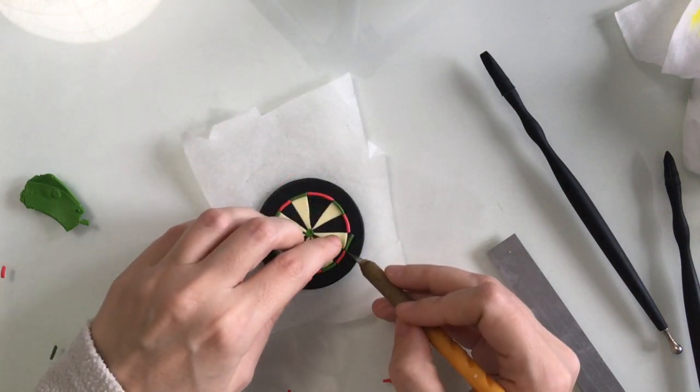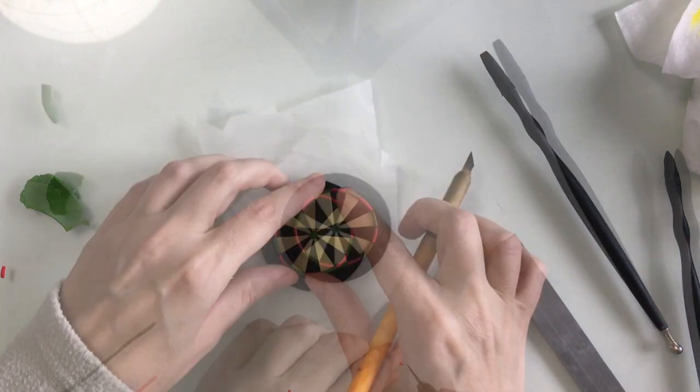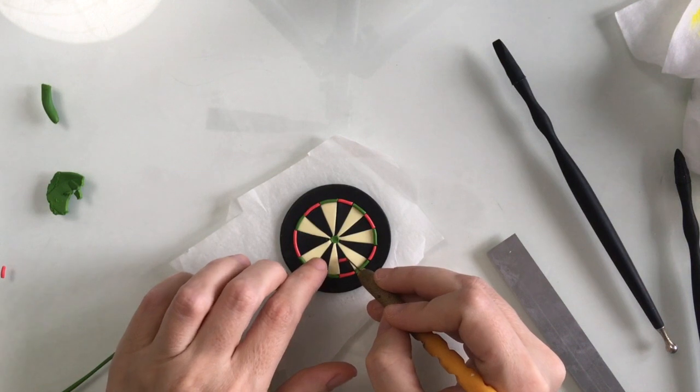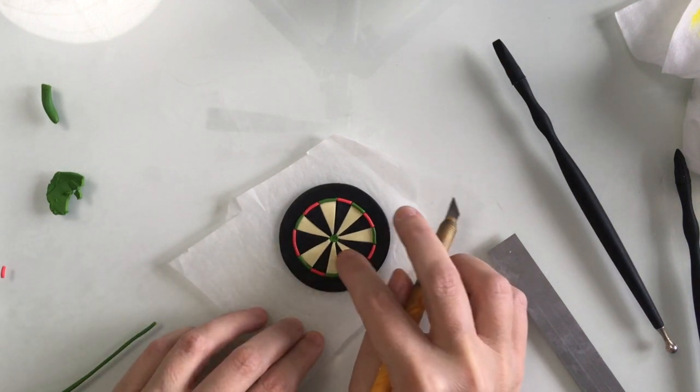It's starting to look a lot more like a dartboard now. I'm going to go around and add some green clay and some red clay in a smaller circle.